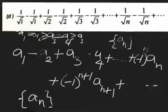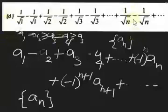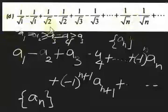The limit of the sequence also goes to zero as n tends to infinity. Therefore, this alternating series is convergent. I hope you understood this example. Let's discuss another example.